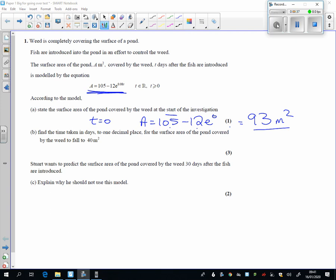Next, it wants to know how long will it take for the weed to go to 40, so I'm going to put the 40 where the a is now, 40 equals 105 minus 12, e to the 0.08t, and now we're going to solve this equation.